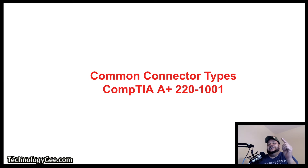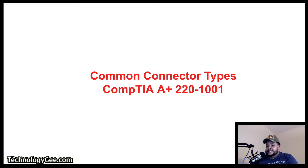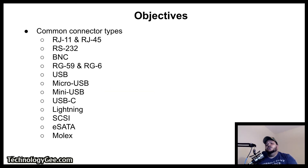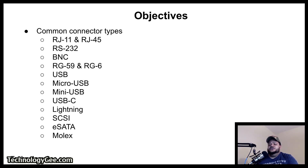What's up everybody, this is your boy Tech G back with another video to help you successfully pass the CompTIA 220-1001 examination. In this video you will learn about common connector types such as the RJ11, RJ45, RS232, BNC, RG59, RG6, USB, micro USB, mini USB, USB-C, DB9, Lightning, SCSI, E-SATA, and Molex.